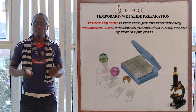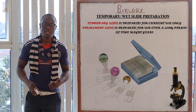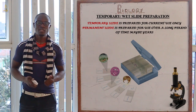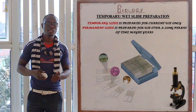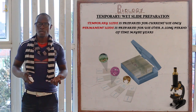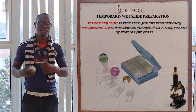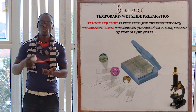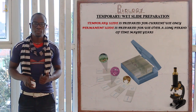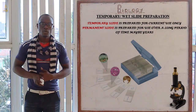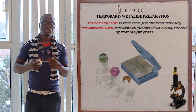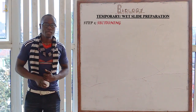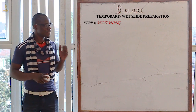The temporary slide may also be called a wet slide, since the specimen is always placed on a liquid drop, as we will see in the different subtopics. After preparing the specimen, we place it on a liquid drop. The first step in preparing a temporary slide is called sectioning.